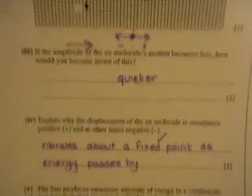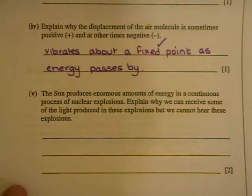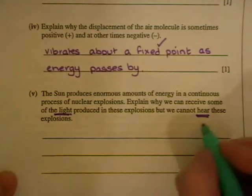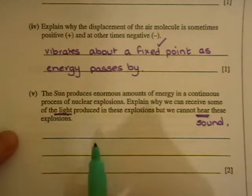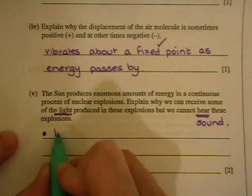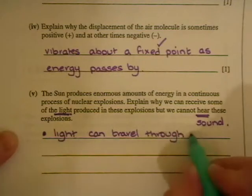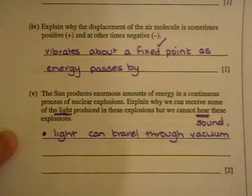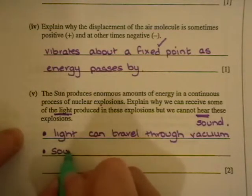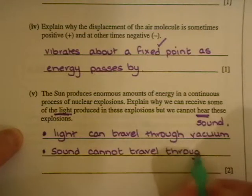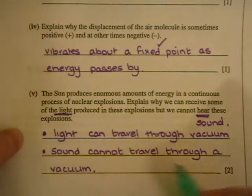And that's what they're trying to get at there, that you understand it goes from one side and then the other side. And they're saying that's positive or negative. Since displacement is a vector, it can have a positive direction or a negative direction. Part five: the sun produces enormous amounts of energy in a continuous process of nuclear explosions. Explain why we can receive some of the light produced in these explosions but cannot hear them. So we've got two marks. So you have to explain something about light and something about hearing, i.e. sound. So why can we see the sun? So for your first mark we're going to say that light can travel through a vacuum. And of course the reason we're saying that is because the vacuum is between the sun and us. In space there's a vacuum. And the second mark is for saying that sound cannot travel through a vacuum. And that's where your two marks are going on.